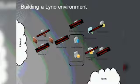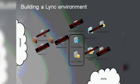The edge server is only required if you do external access. The reverse proxy is also only required for external access, and you may already have one you can reuse. The director is optional — even if you do external access, it's still optional. So if you look at that, not so many servers are required. If it's a small deployment, it scales.